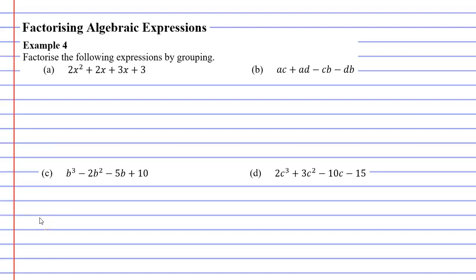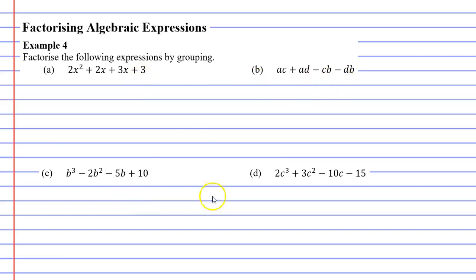In this video, we're going to complete example four, and we're going to factorize the following expressions by grouping. When you look at each of the four questions here, you might notice that every expression has one, two, three, four terms. And when you see an expression with four terms like you see here, that's a good indicator that you need to factorize by grouping.